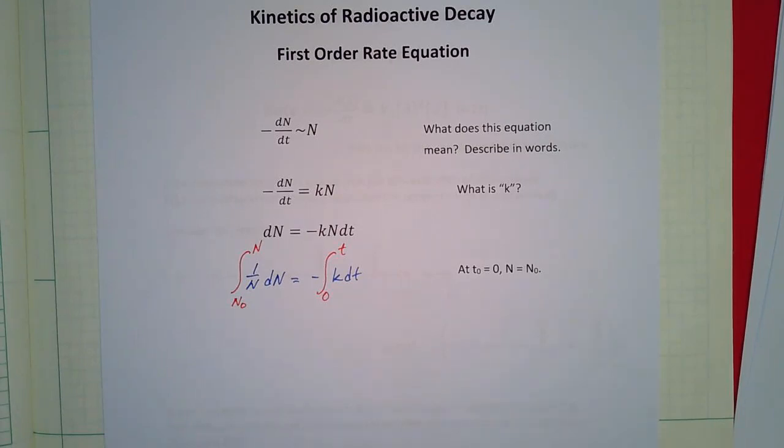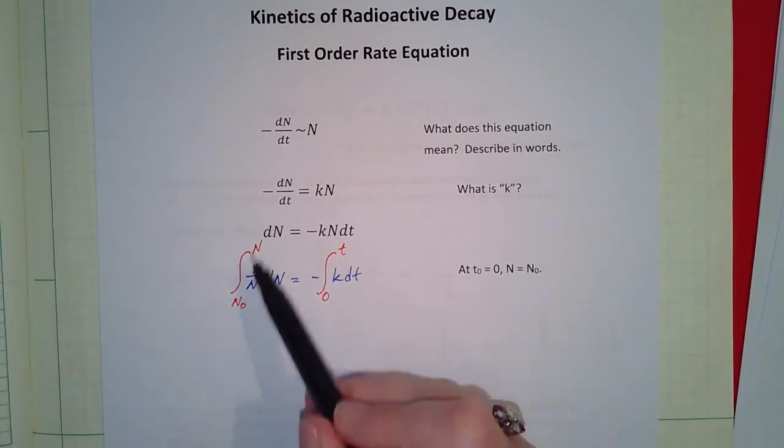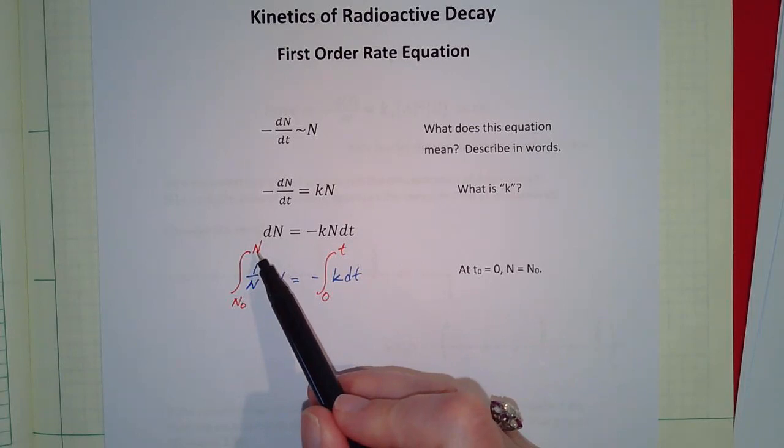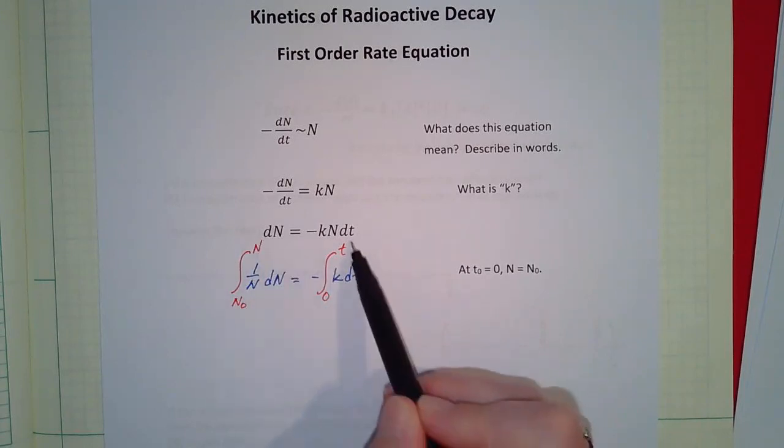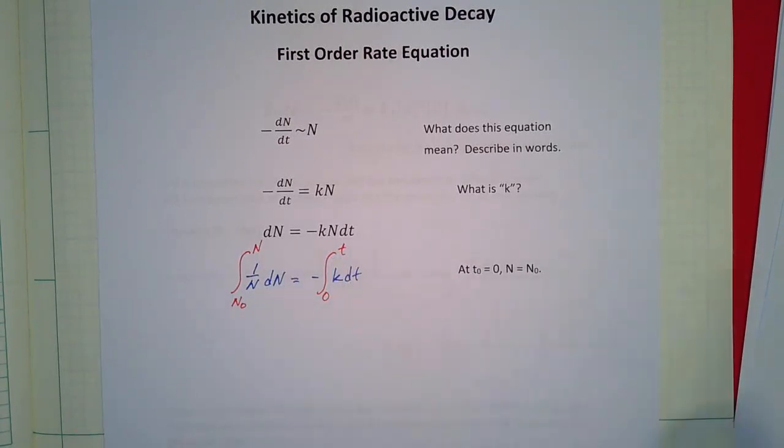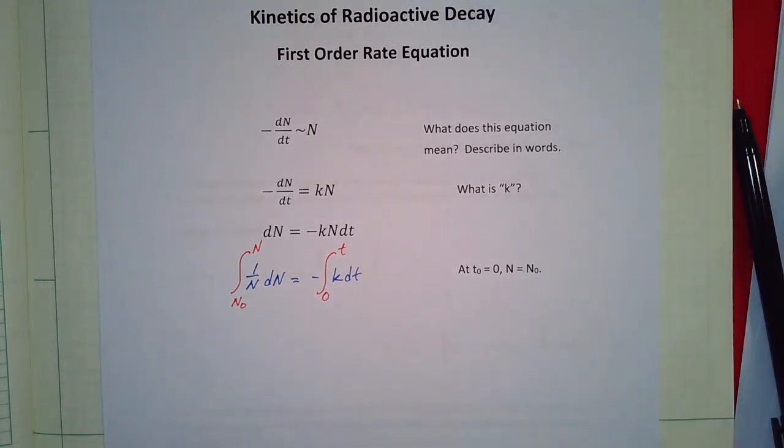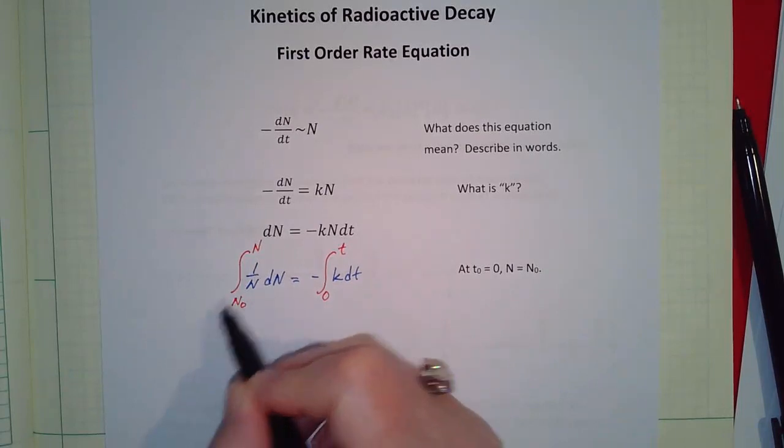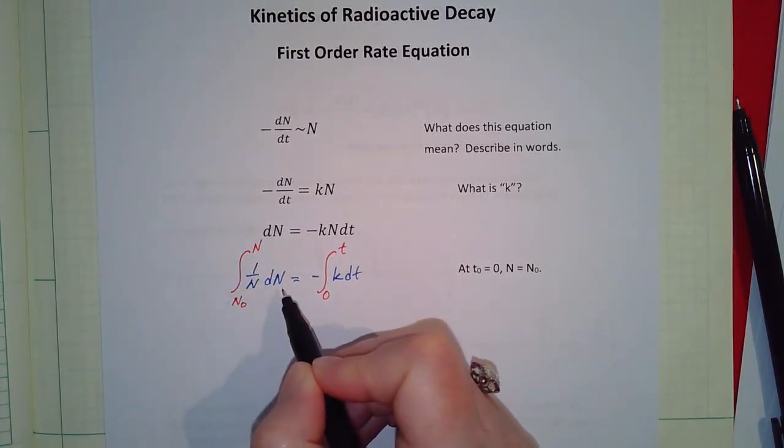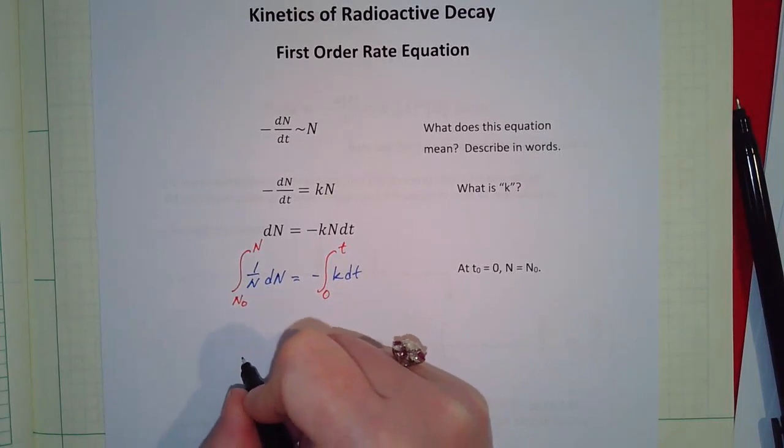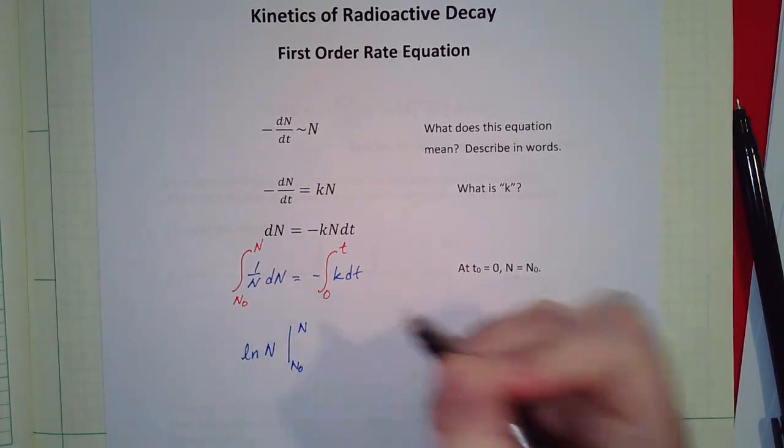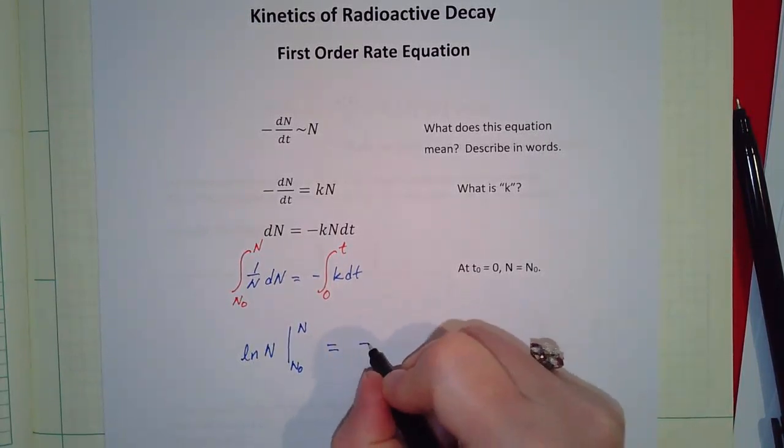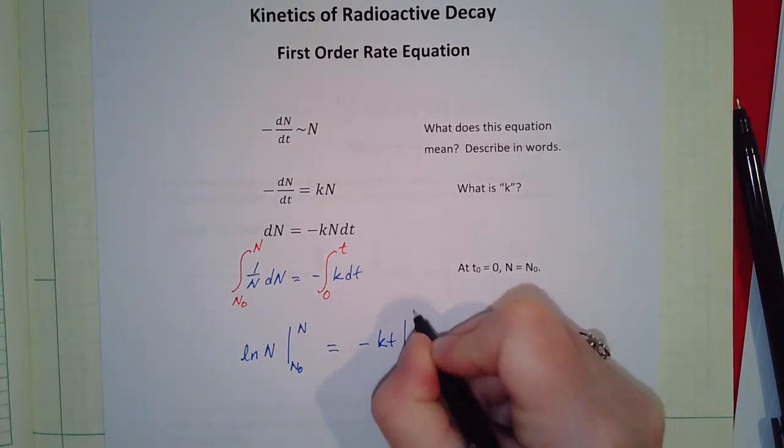And then we're going to go from our initial concentration or our initial number of atoms, so N naught, to some unknown number of atoms. Typically these are problems where we either want to know what this is or we want to know what the time is. Okay, so now we just need to integrate that. So remember one over x, the integral of one over x dx is just the natural log. So we've got the natural log of N going from N naught to N equals minus kt going from zero to t.